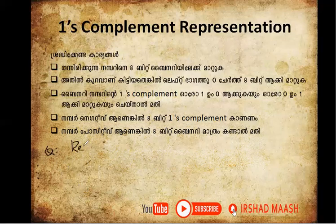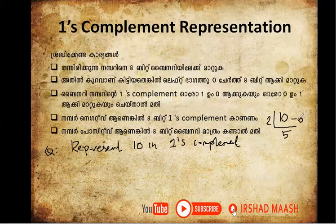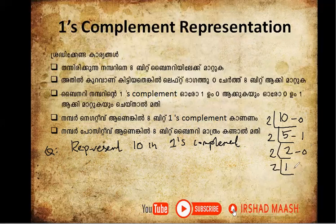Next example: represent positive 10 in one's complement. Convert 10 to binary: 10 divided by 2 is 5 remainder 0; 5 divided by 2 is 2 remainder 1; 2 divided by 2 is 1 remainder 0; 1 divided by 2 remainder 1. Reading from bottom to top gives 1010.